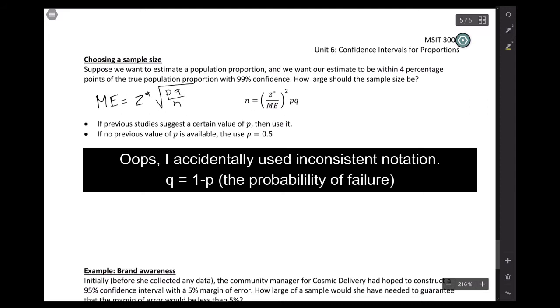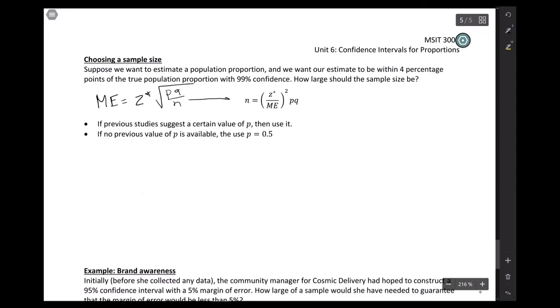So if you rearrange that a little bit, you can figure out what the sample size needs to be in terms of Z star and the margin of error, P and Q. So if you want to do this with the algebra, you can, but this will also be on the reference sheet. So you don't have to be able to rearrange it quickly.